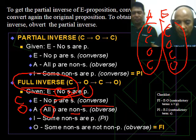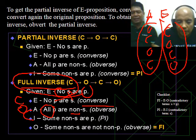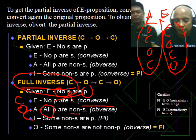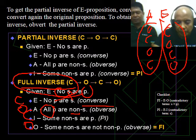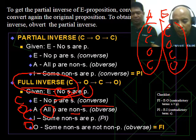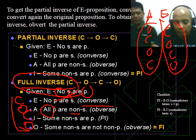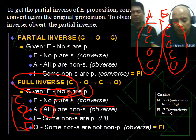And finally we move on to our last, which is obverse. We have completed the COCO procedure. That's the full inverse. So some non-S are P becomes some non-S are not non-P. From an I proposition it becomes an O, then contradict the predicate.